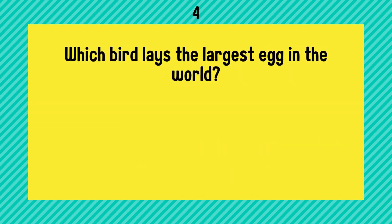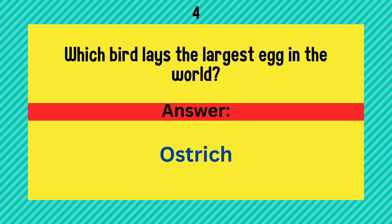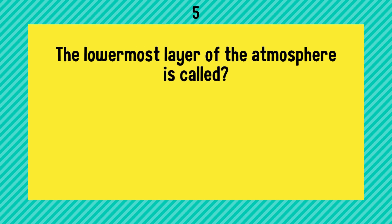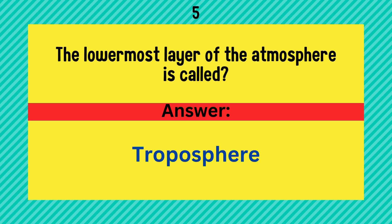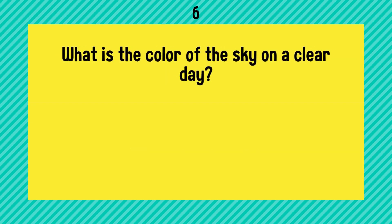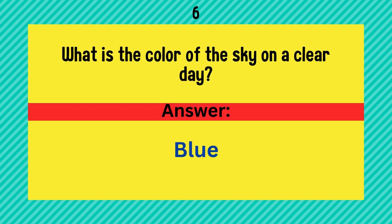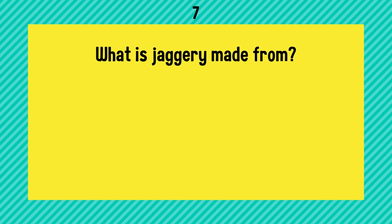Which bird lays the largest egg in the world? It is an ostrich. The lowermost layer of the atmosphere is called? Answer is troposphere. What is the color of the sky on a clear day? Answer is blue.